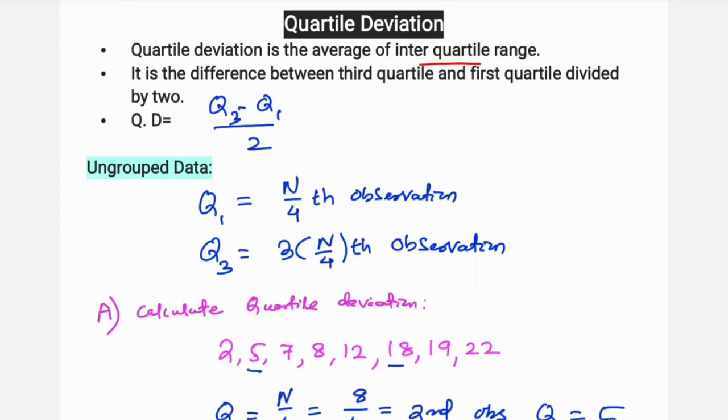Quartile deviation is the average of interquartile range. First part is Q1, this is Q2, and third one is Q3. The last one is Q4: first quartile, second quartile, third quartile, and fourth quartile. It is the average of interquartile range, that is Q3 minus Q1 by 2. It is the difference between third quartile and first quartile divided by 2.